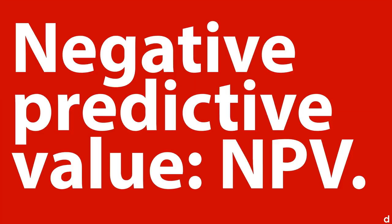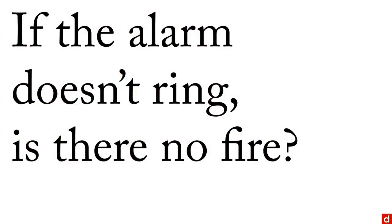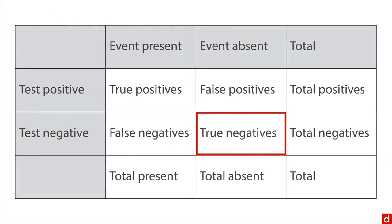And negative predictive value, or NPV, says: if the alarm doesn't ring, does that in fact mean that there is no fire? Well, here you're looking at true negatives and dividing it by total negatives, the time that it doesn't ring. And again, you want to maximize that, so the true negatives account for all of the negatives, the same way you want the true positives to account for all of the positives.